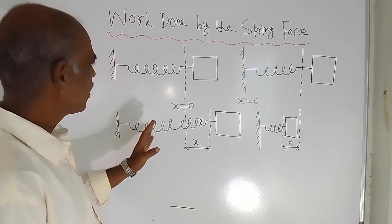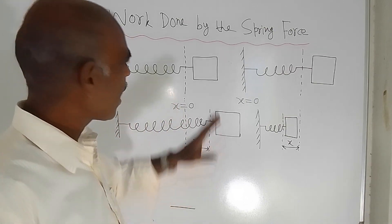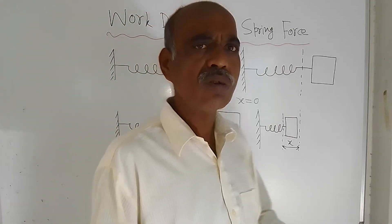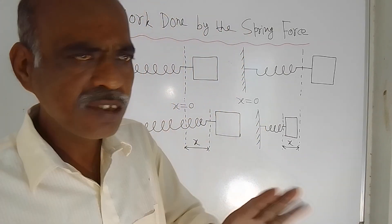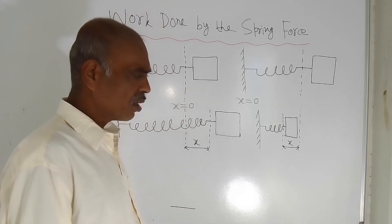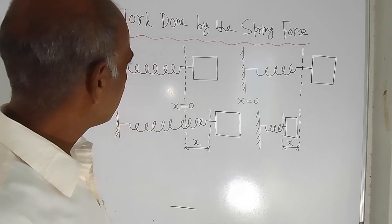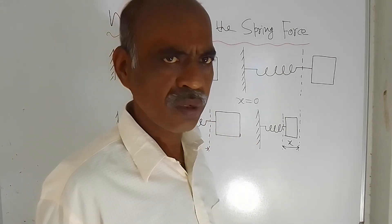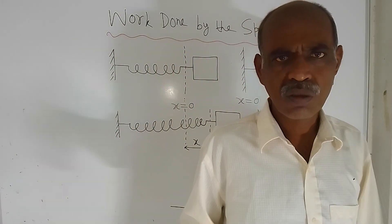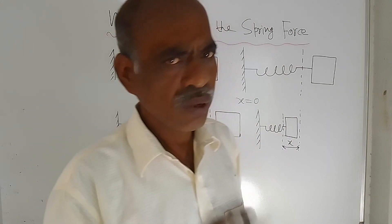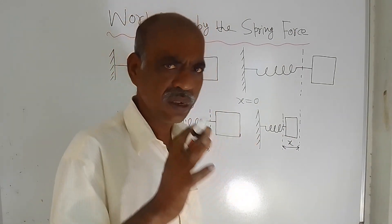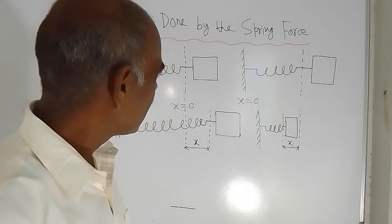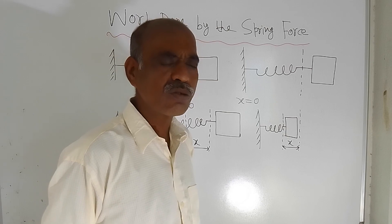Suppose when there is no force acting on this block, that position is called the relaxed position. And at that position, this vertical line represents x = 0. We are choosing the coordinate system this way. When the block is at the relaxed position, any vertical line can represent the origin or x = 0 location.